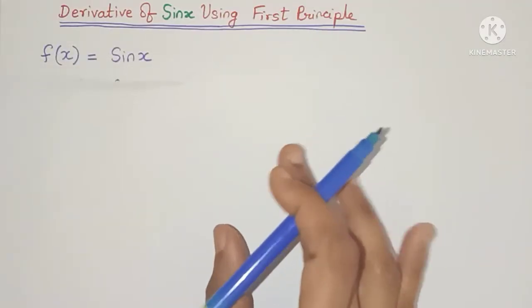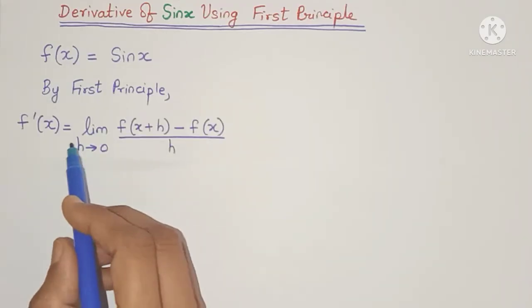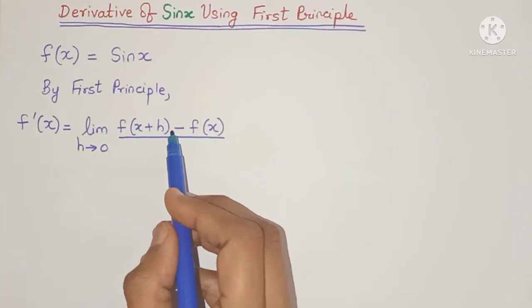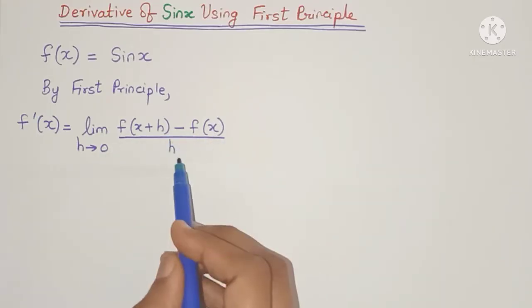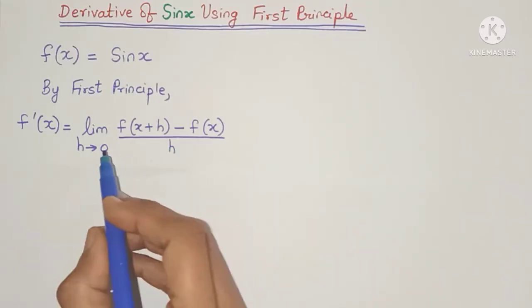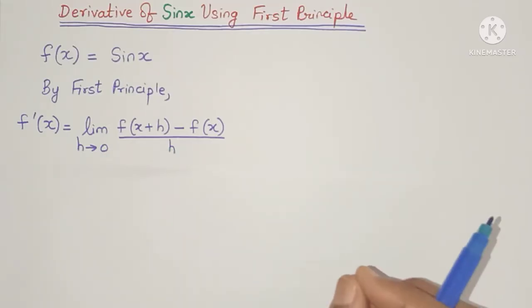Then by the first principle, the derivative f'(x) is nothing but limit h tends to 0, f of x plus h minus f of x, the whole divided by h. Now h is any number which is not 0 but its value is very close to 0.